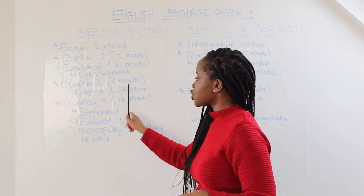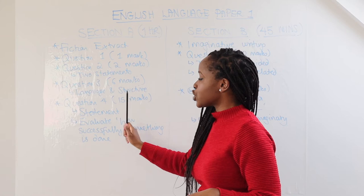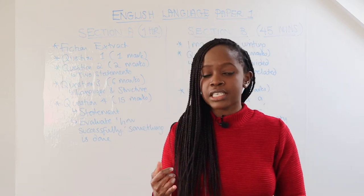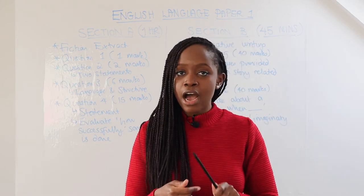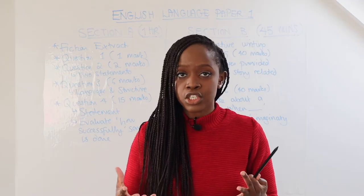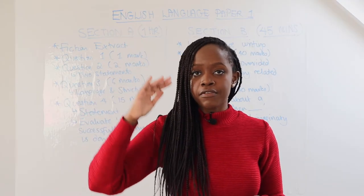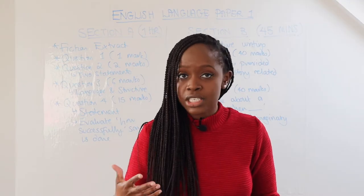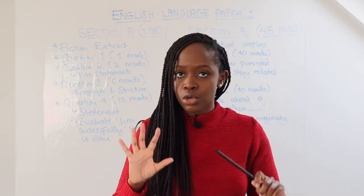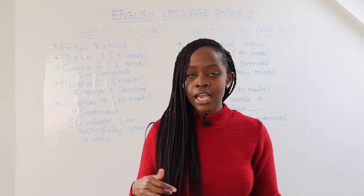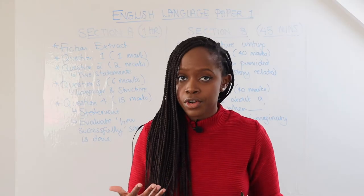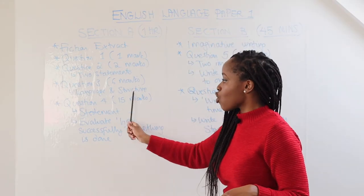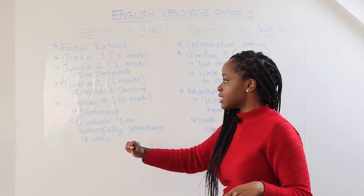Question three in this section is worth six marks, and this is a language and structure question. Language refers to things like alliteration, metaphors, similes, nouns, verbs, adjectives, and so on. Structure refers to the beginning versus ending of the passage, sentence types, and interesting punctuation — not full stops and commas, but things like ellipsis and asyndeton. This question is where you touch on these elements for six marks.